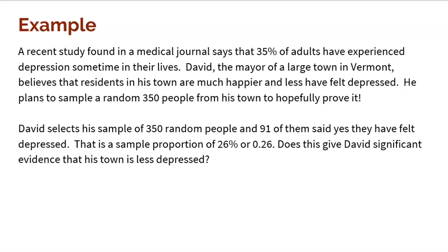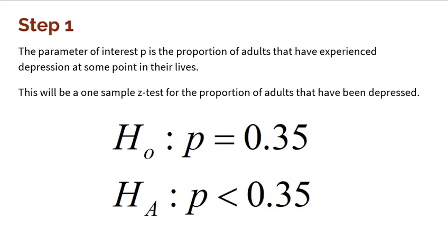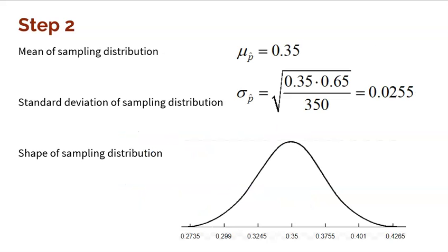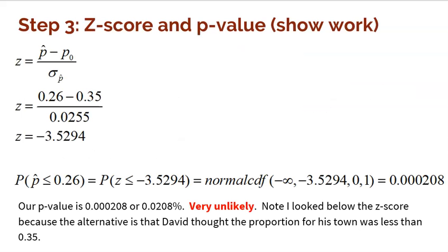Let's revisit the depression example: 35% of adults have experienced depression in their lifetime. David, the mayor of a large Vermont town, believes his town is happier — hence less depressed. He samples 350 people; 91 say they felt depressed, that's 26%. The null is p = 0.35, the alternative is p < 0.35. His sample proportion of 0.26 gives a Z-score of -3.5294.